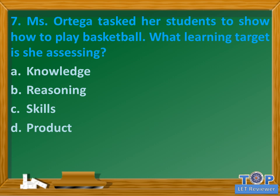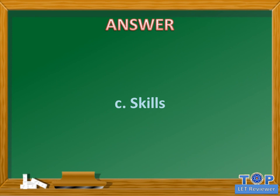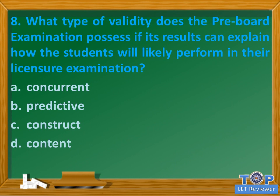Question number seven: Miss Ortega tasked her students to show how to play basketball. What learning target is she assessing? A. Knowledge, B. Reasoning, C. Skills, D. Product. Answer: C. Skills.